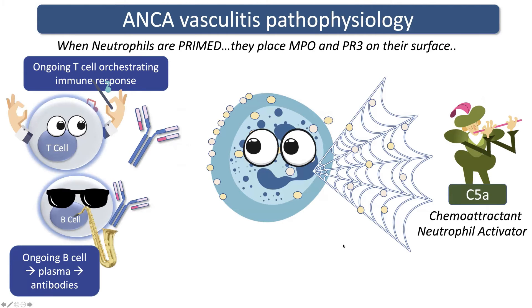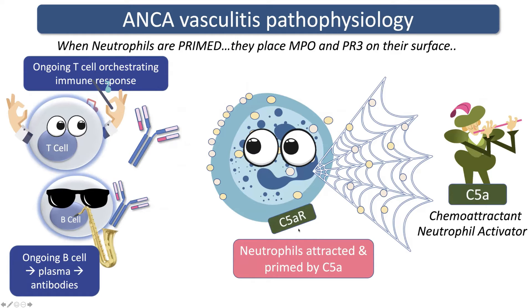So coming back to this diagram, we can see how this is all coming together to create this perfect storm of ANCA vasculitis. Now in the mix, we have C5A, which is going to bind to the C5A receptor on the neutrophil. That is going to attract more neutrophils to the area but also prime this neutrophil. And we said at the start that when we prime a neutrophil, it places more of these molecules on the surface, and then the antibodies can bind to those molecules — and the whole thing is just this big vicious cycle.